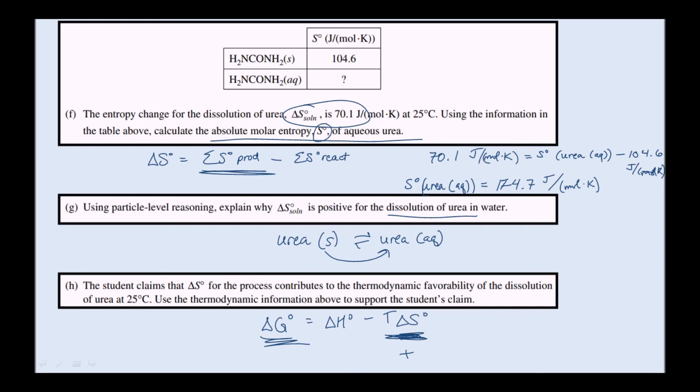It's making delta G smaller, which is closer to being negative, contributing to thermodynamic favorability. Looking at it the opposite way: if delta S were negative, that would increase delta G and make the reaction less thermodynamically favorable. It's not asking whether it's making it spontaneous or not, but you can use the idea that a smaller delta G is more favorable. Because delta S is positive, it's taking away more from delta H so that delta G is smaller, making the dissolution more thermodynamically favorable.